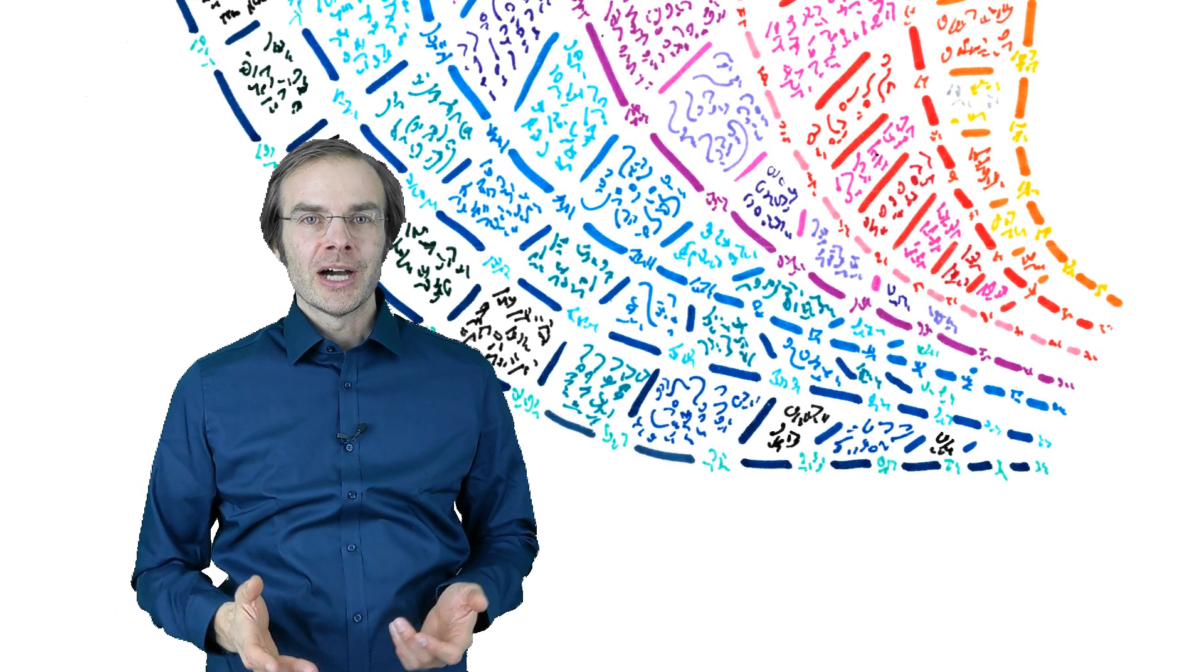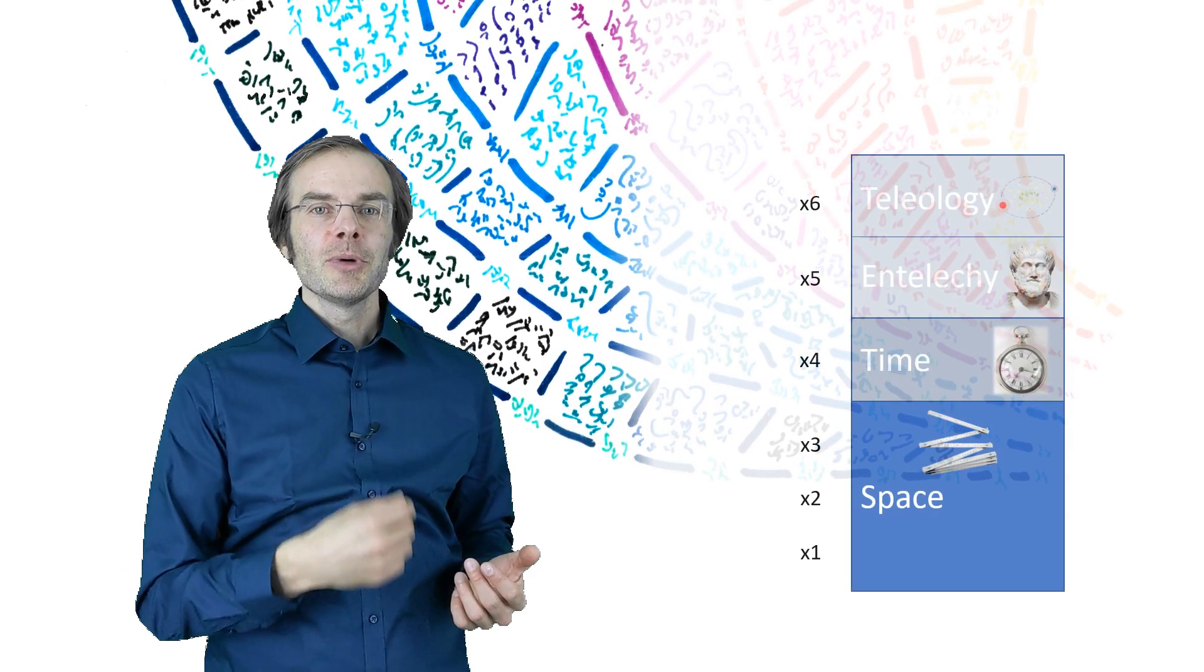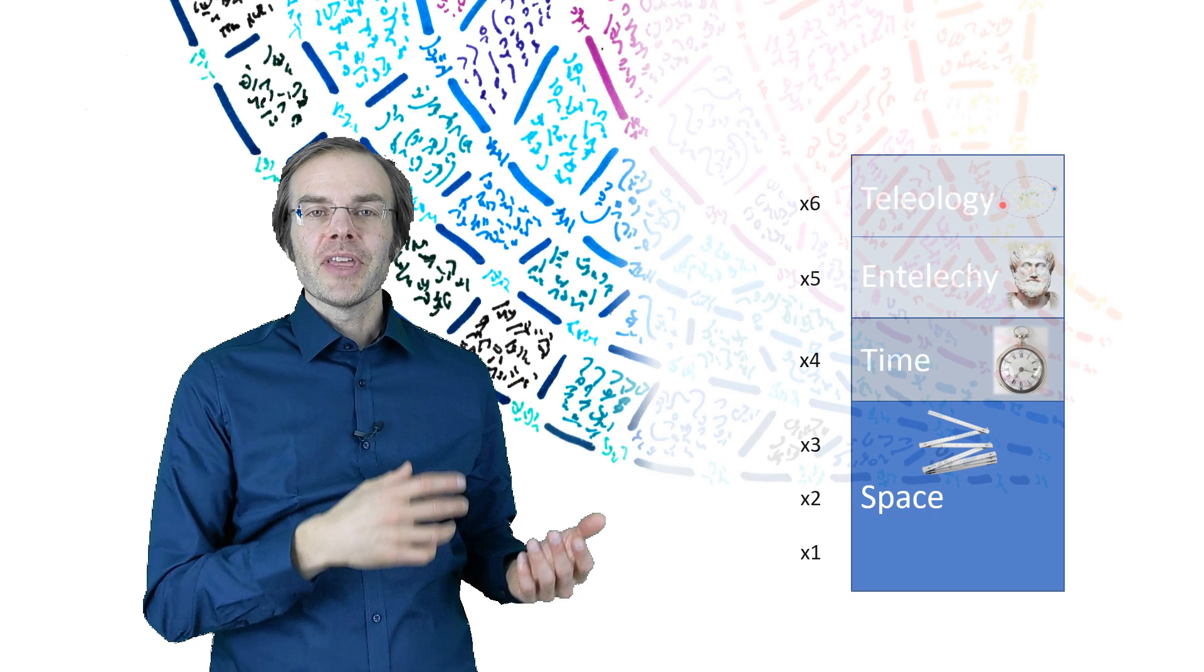As you may know by now, according to Burkhardt-Heim, we live in a six-dimensional world. Dimensions 1, 2 and 3 being ordinary space, he called the R3.